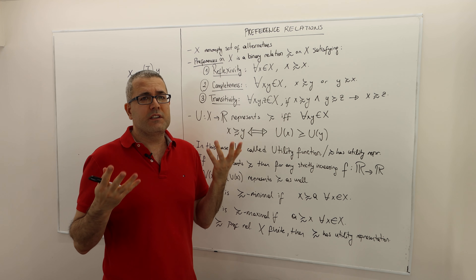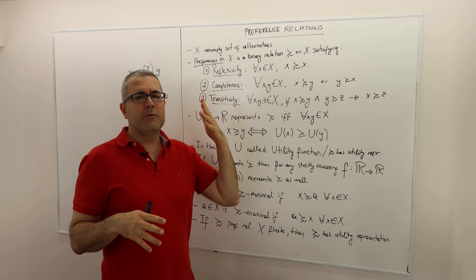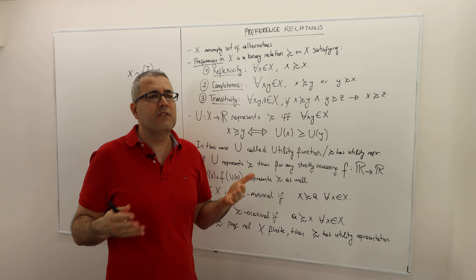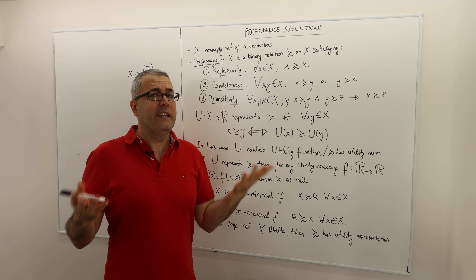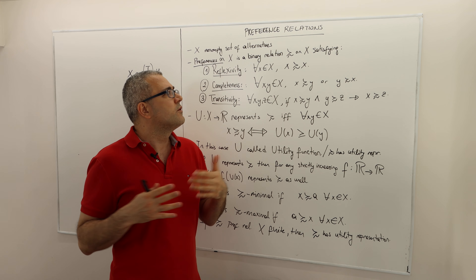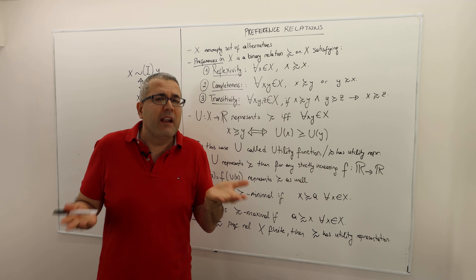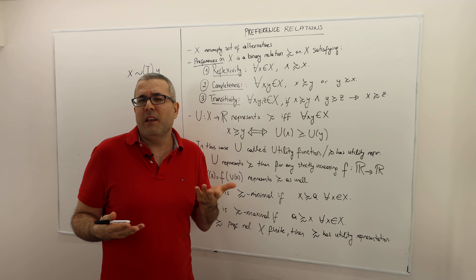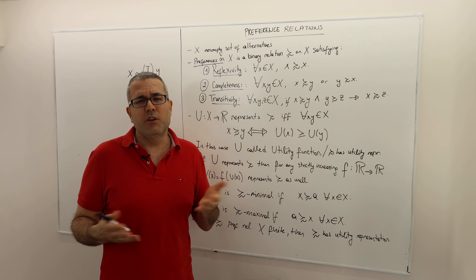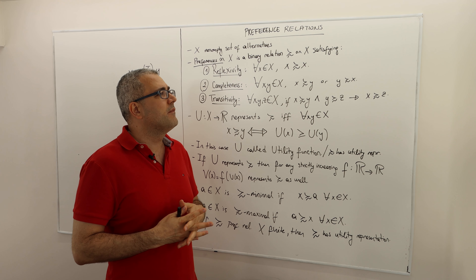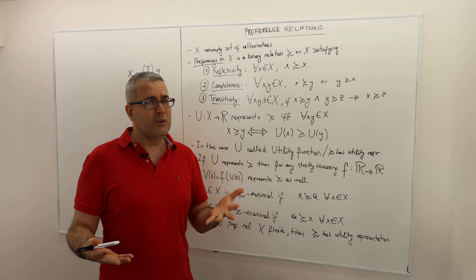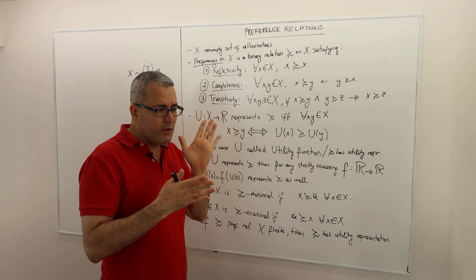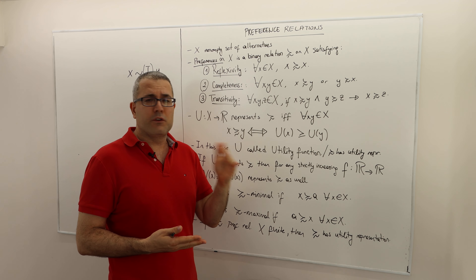So what is the third scenario? You are either preferring one over the other or you're indifferent. Is there any other option? Yes — you may say 'I have no idea which alternative is better.' In real life choices, you may never think of a situation where you have no clue, but sometimes we do. So completeness means you always have a favorable alternative — you can always compare.